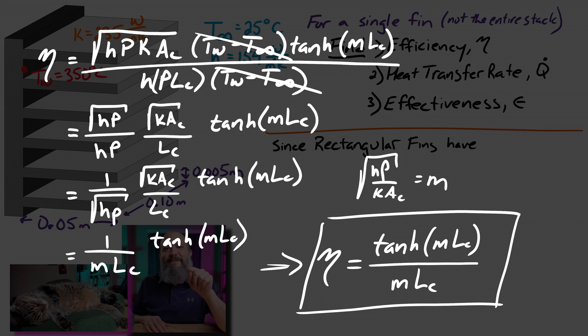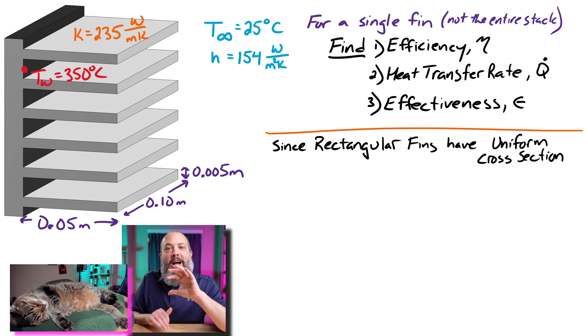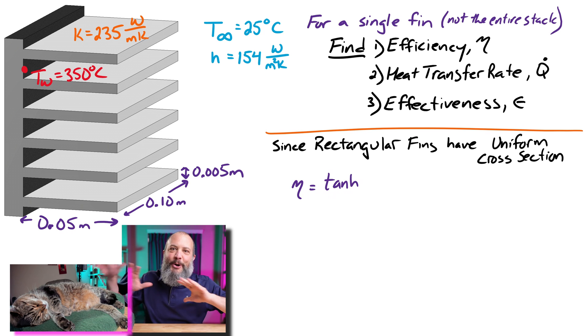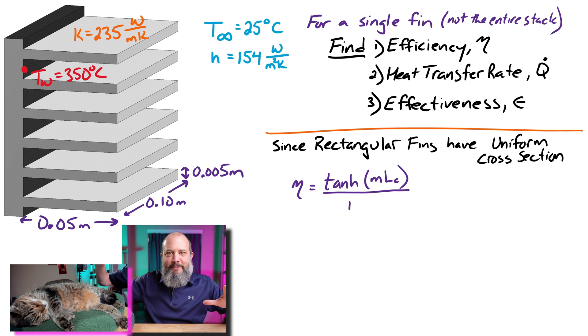It means in order to solve for the fin efficiency for a rectangular fin, or in fact, even a cylindrical fin, any fin with a uniform cross section, it's just a hyperbolic tangent of ML divided by ML. That's it. You don't have to calculate the full heat transfer. The two ratios all simplify to this one really simple expression, simple-ish expression.